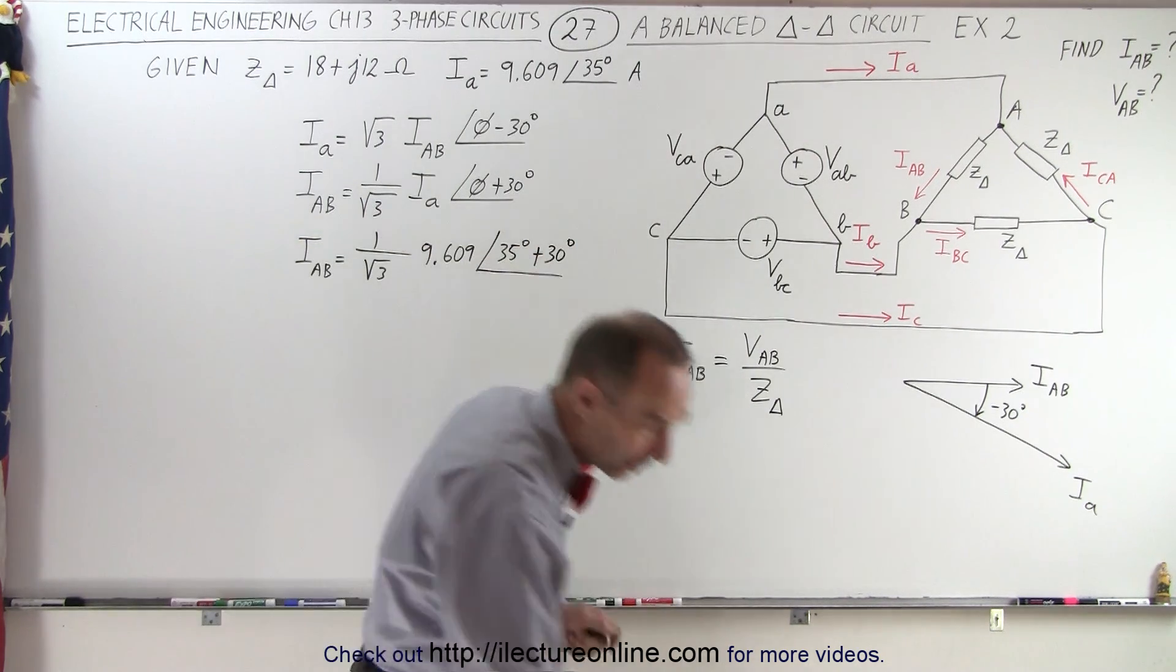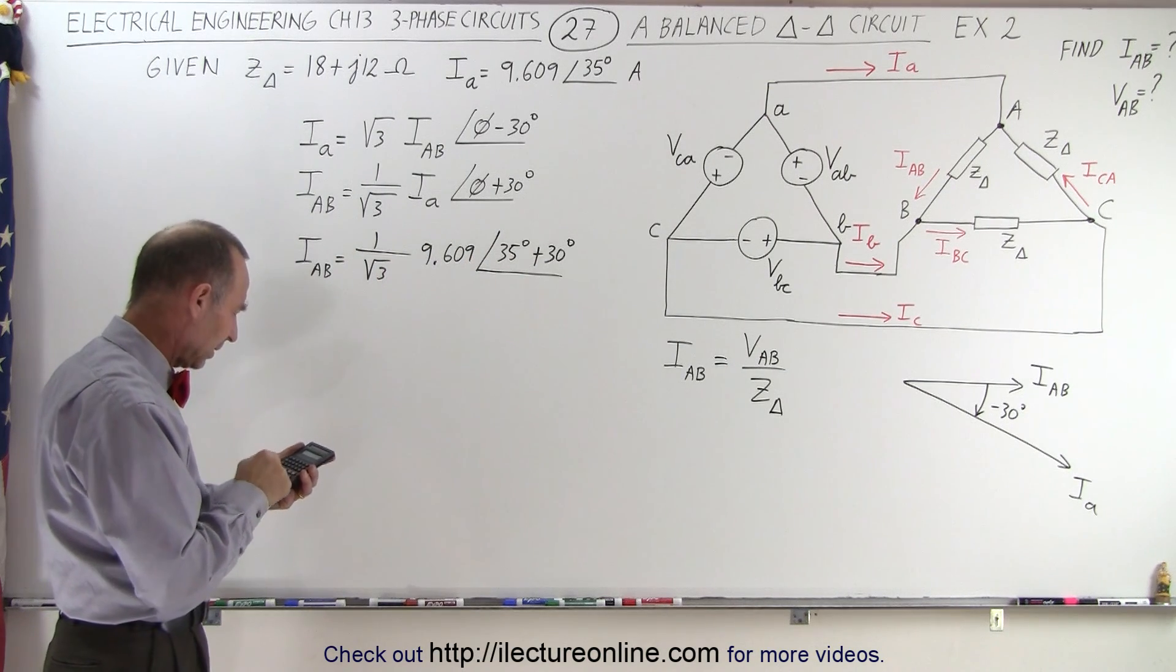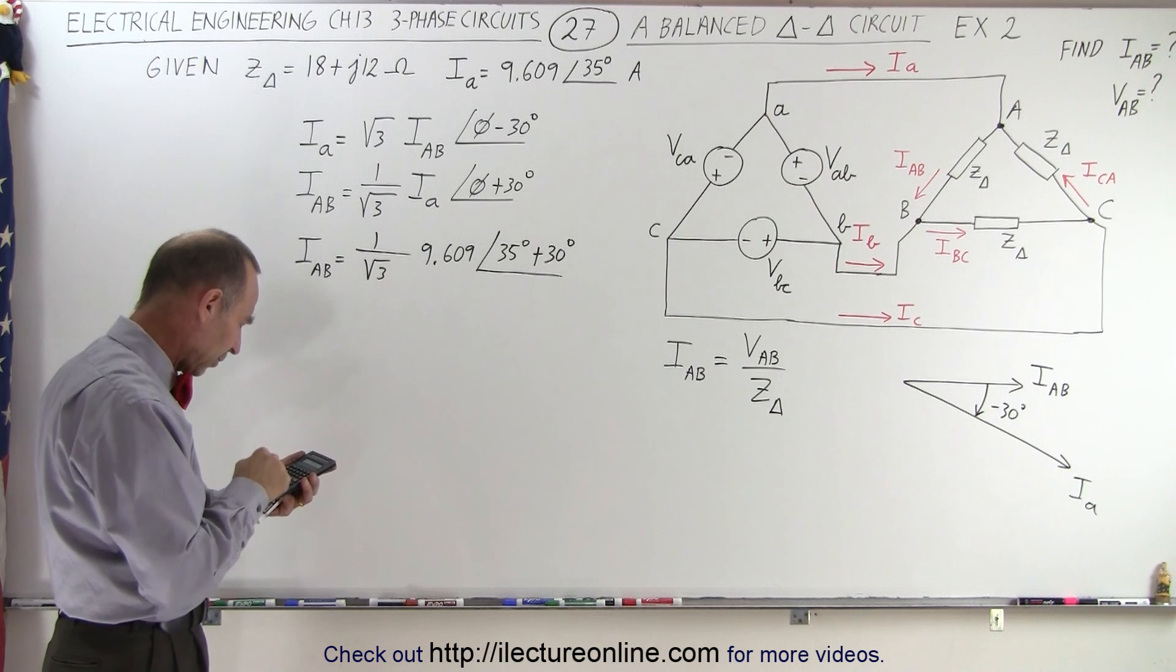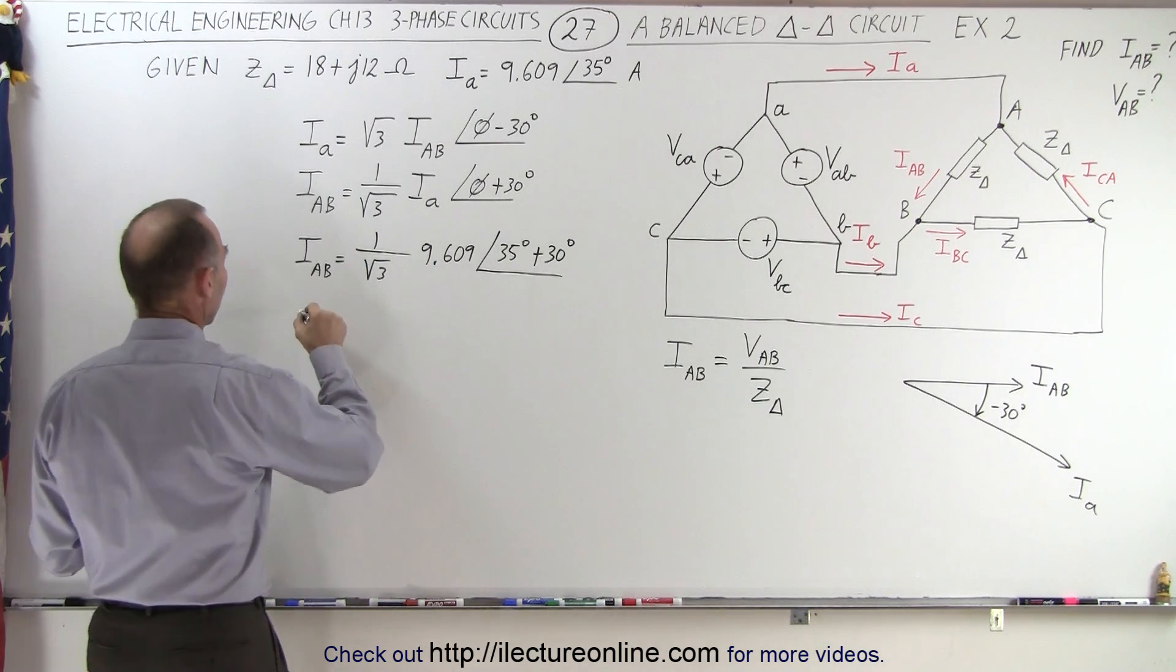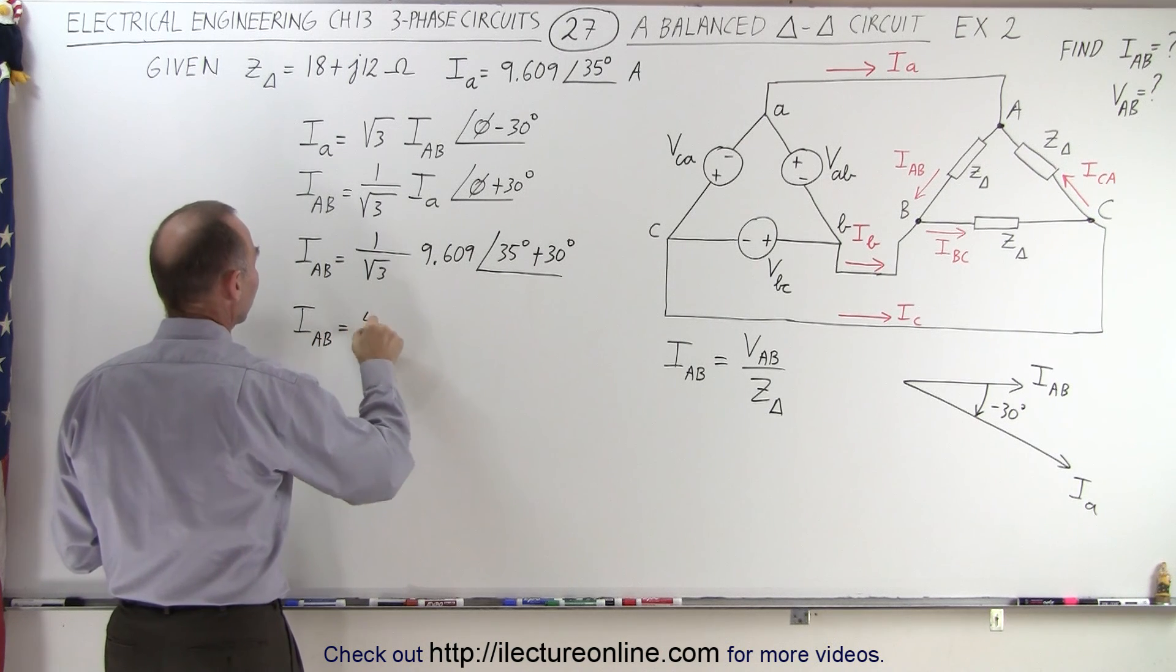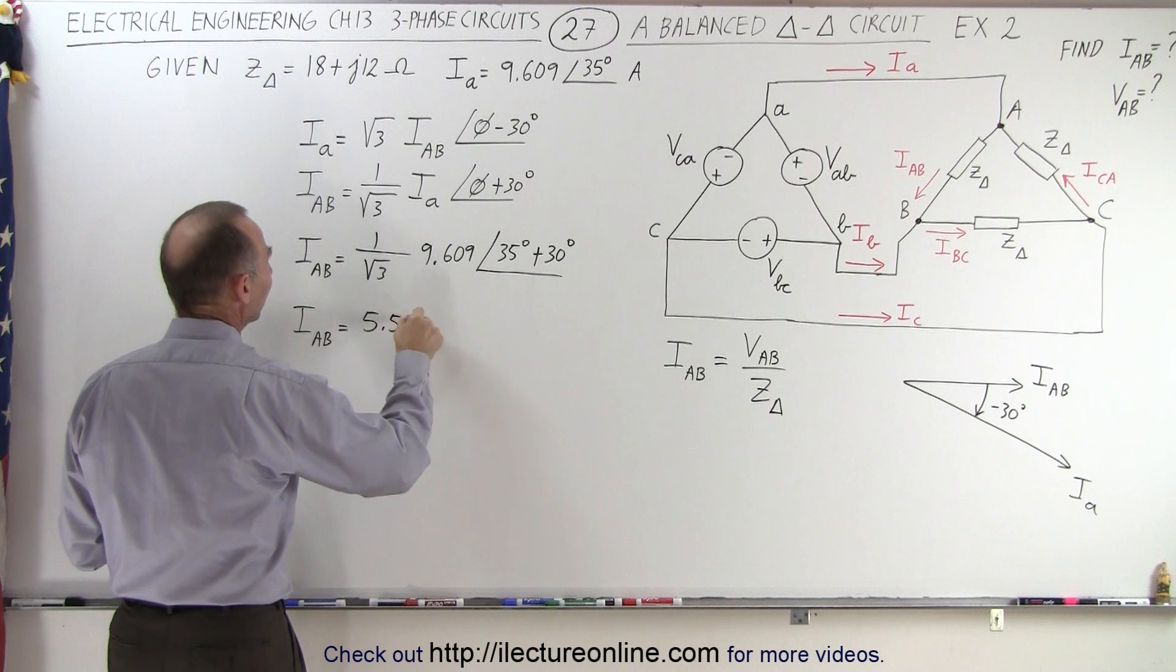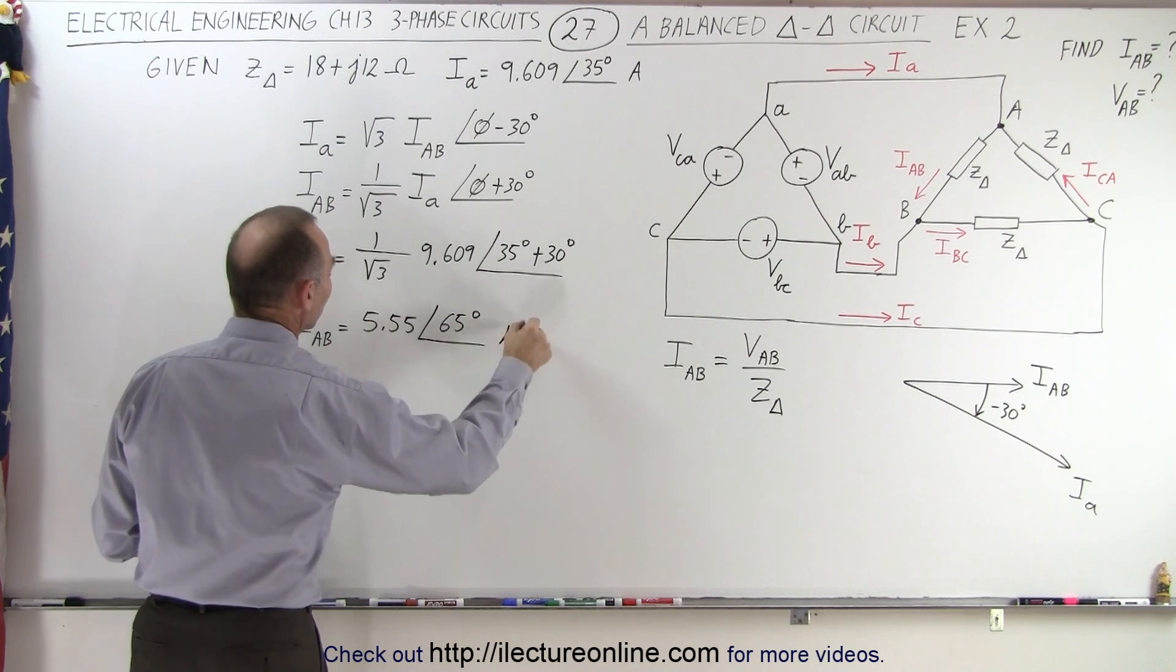So, let's go ahead and calculate that. So, we have 9.609 divided by the square root of three, that gives us 5.55. So, IAB has a magnitude of 5.55 with a phase angle of 65 degrees, and that's in terms of amps.